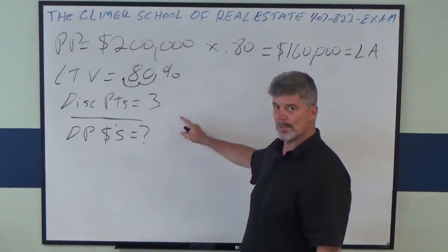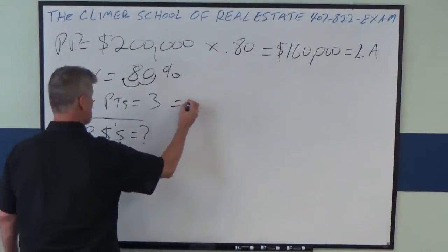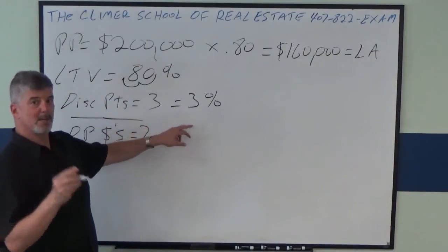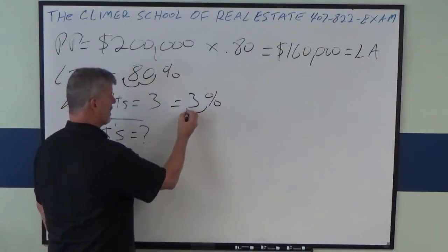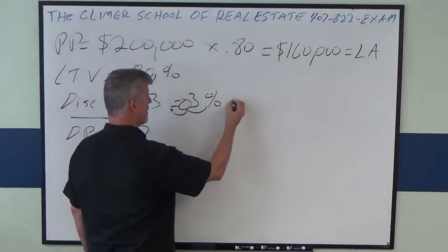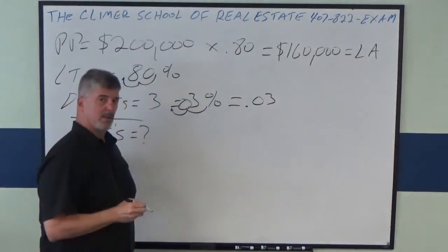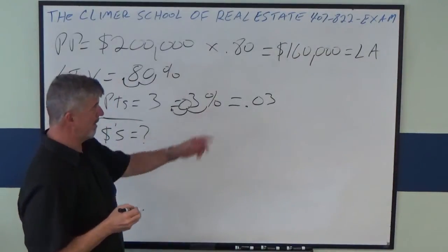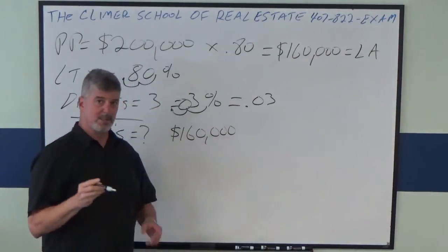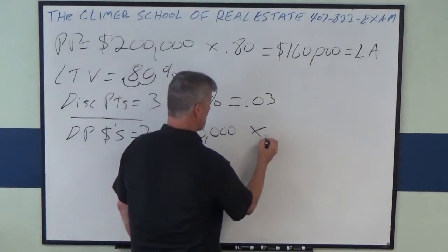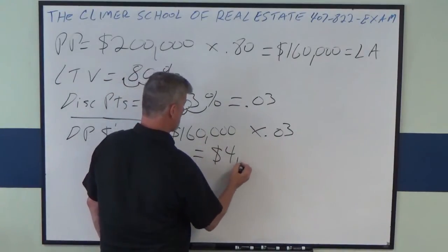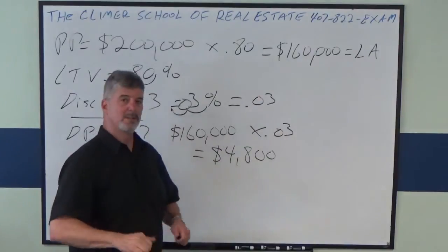So we have three points. Three points equals 3%. Now I'm going to take that 3% and turn that into a decimal by going to the left two spots. If there's nothing there, it's a zero. Zero is a placeholder. Now I know how much to multiply the loan amount by. So I take the loan amount of $160,000, multiply it by .03 for my points, and that equals $4,800.